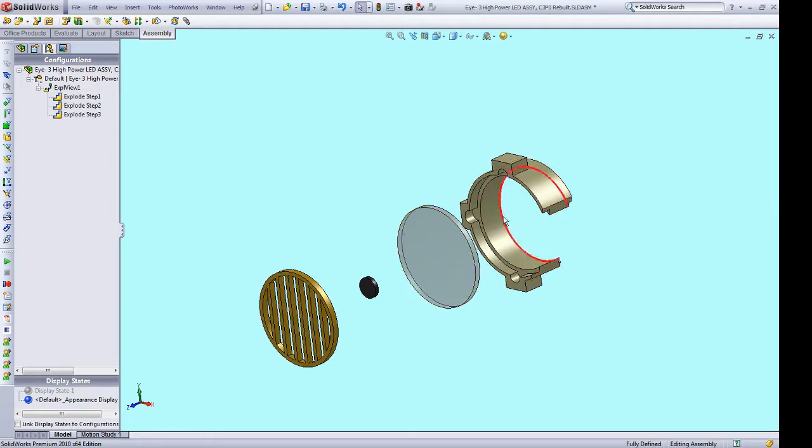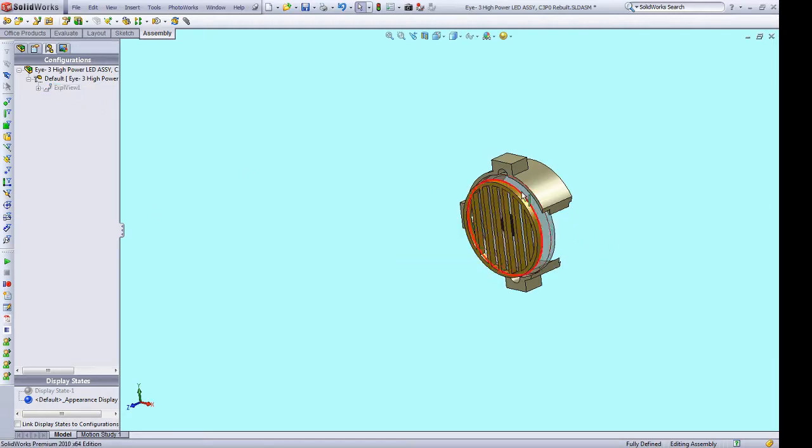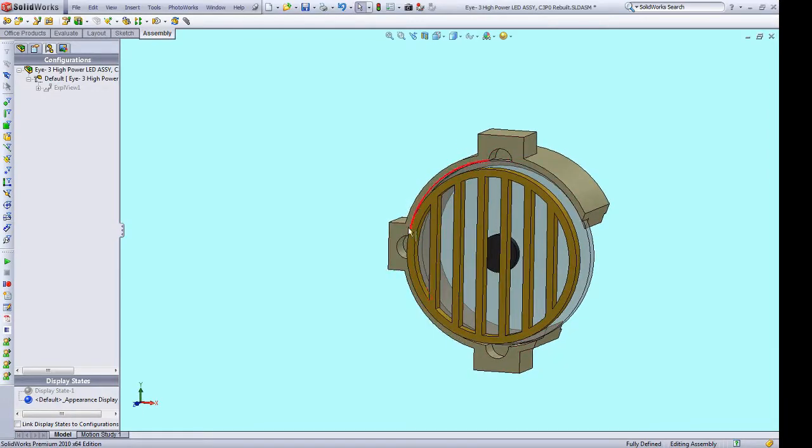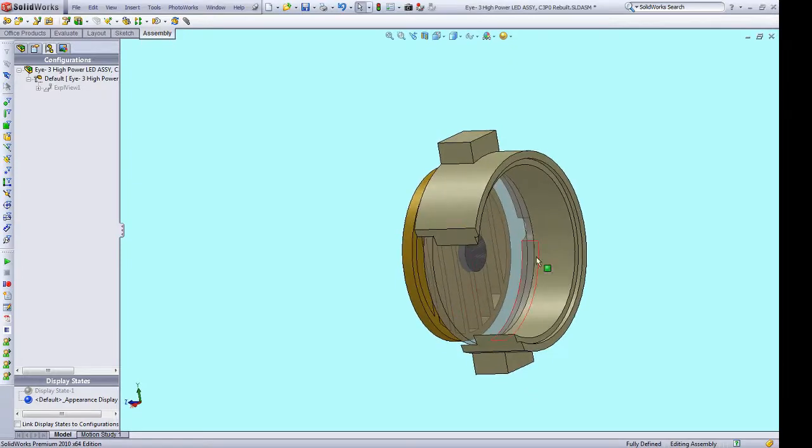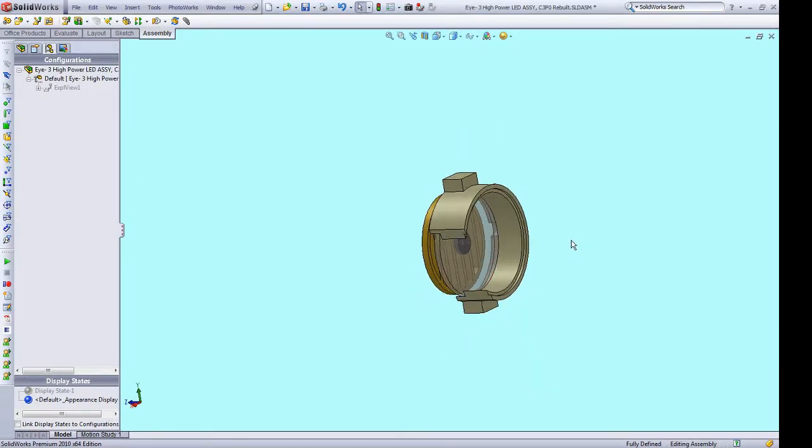Then we have a 3D printed housing that everything will basically be bonded to. The lens is bonded in these three specific spots and we'll probably put a little bit more around the outer edge. There's going to be a diffuser that goes in the back and then there'll be a couple other components which we'll add shortly.